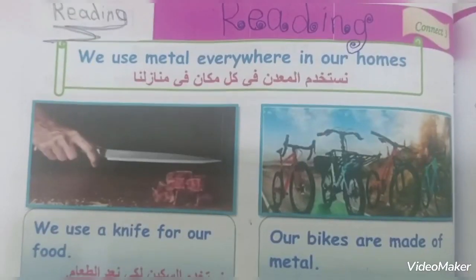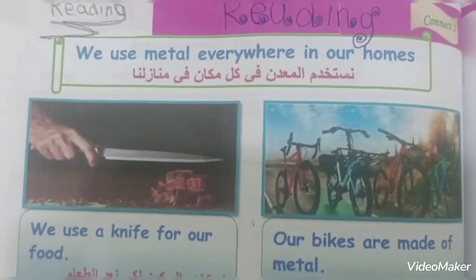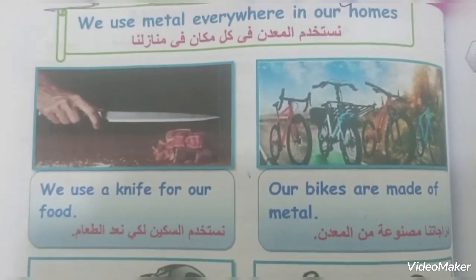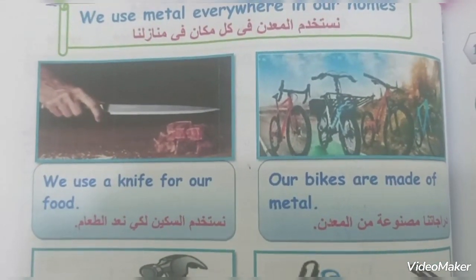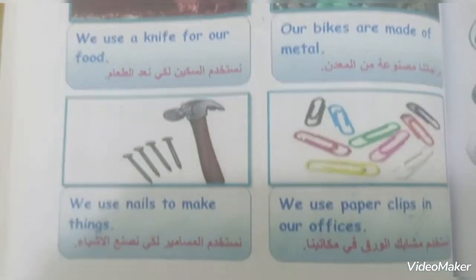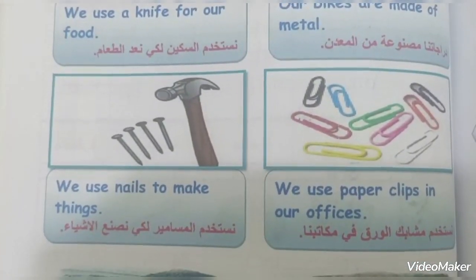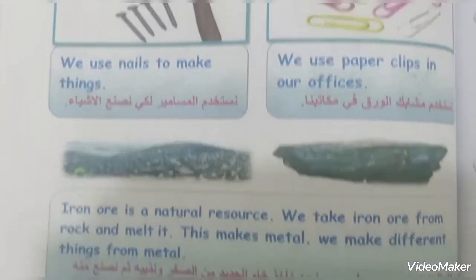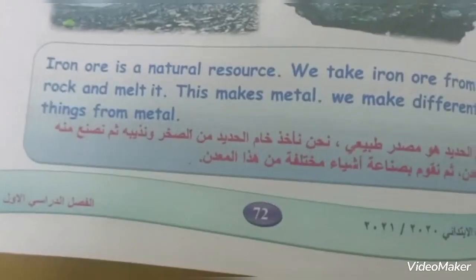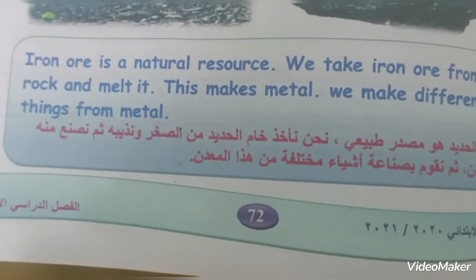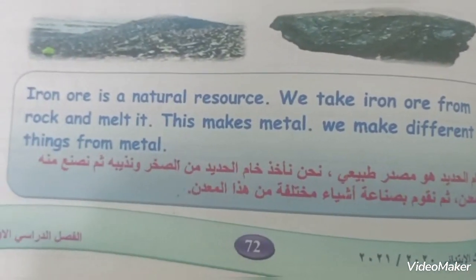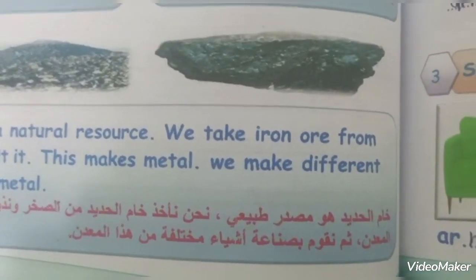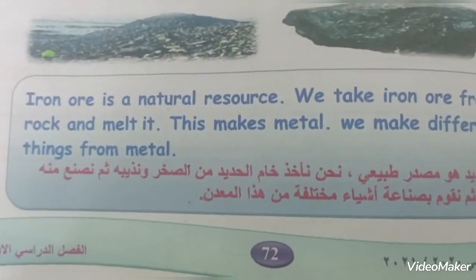Hello, I'm Asil. We use metal everywhere in our homes. We use a knife for our food. Our bikes are made of metal. We use nails to make things. We use paper clips in our offices. Iron ore is a natural resource. We take iron ore from rock and melt it. This makes metal. We make different things from metal. Goodbye.